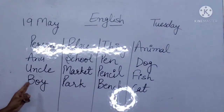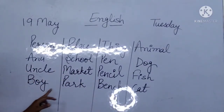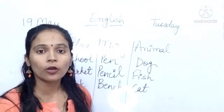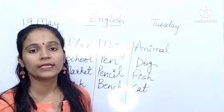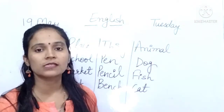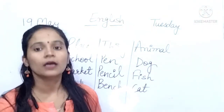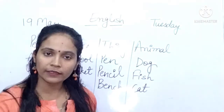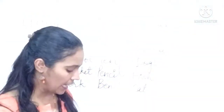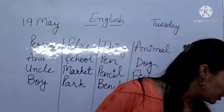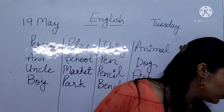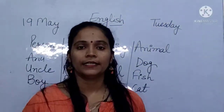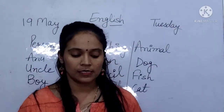These are the examples of person, place, thing, and animal. I hope you all have understood. If you have any doubt, you can ask in your doubt session. Now we will do our next exercise related to naming words.